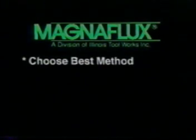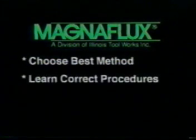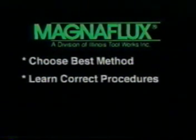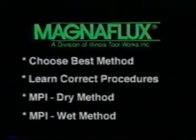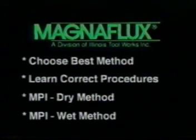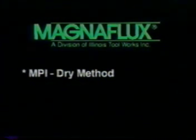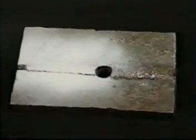Once you know how to choose the right testing method, the next step is learning the correct inspection procedures. For the next few minutes, we will concentrate on the magnetic particle process — both the dry method and the wet method. You'll see the Magnaflux products that are available and learn how the process works. To demonstrate the dry method of magnetic particle testing, we will inspect the weld area on this steel plate for surface cracks.